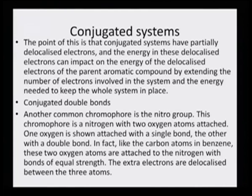Conjugated systems have partially delocalized electrons, and the energy in these delocalized electrons can impact the energy of the delocalized electrons of the parent aromatic compound by extending the number of electrons involved in the system. The more the conjugation, the better it is and the deeper would be the color. If the conjugation is outside the aromatic ring, it is extended into the aromatic ring. Conjugated double bonds — alternating double bond, single bond, double bond — create a good amount of conjugated system.